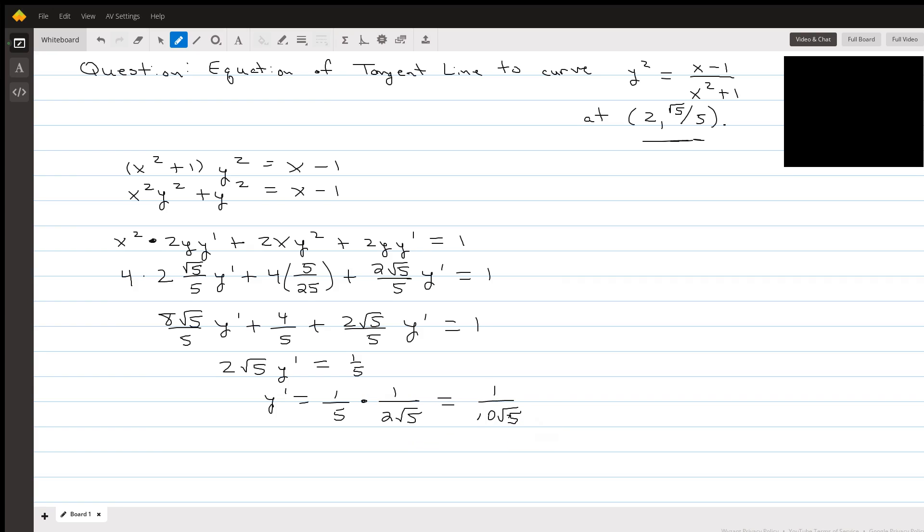And that is going to be our slope value. So using the given coordinate, the tangent line is going to be y minus root 5 over 5 equals 1 over 10 root 5 times x minus 2.